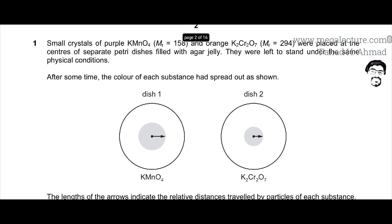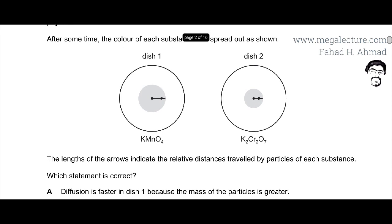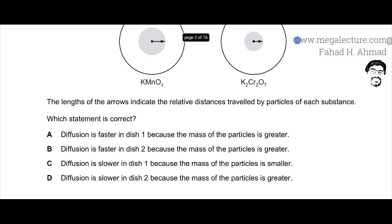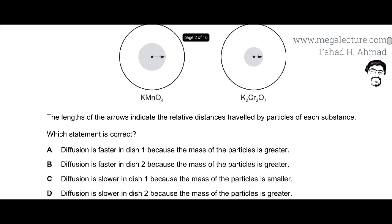Now moving to the next part, the question then states that the lengths of the arrows indicate the relative distance traveled by particles of each substance. Which statement is correct? So the first statement is that diffusion is faster in dish 1 because the mass of the particle is greater. Now let's go back and have a look.